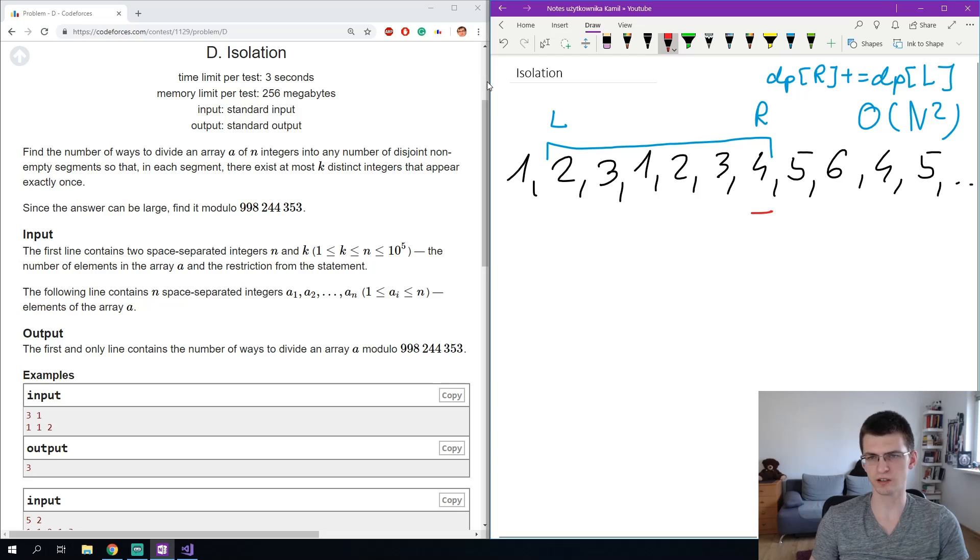If we start from r and we move to the left, for every new number I increase its number of occurrences in some global array to count those numbers. I also store the number of unique numbers and all the updates can be done in constant time per every new number. The complexity will be n square.